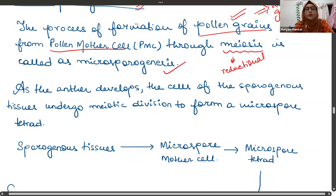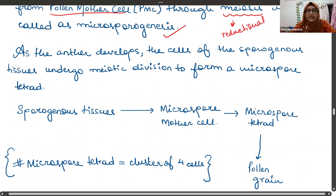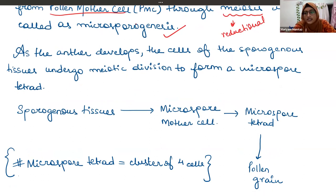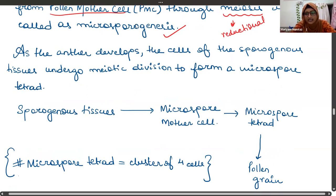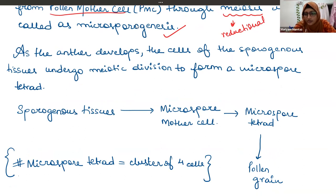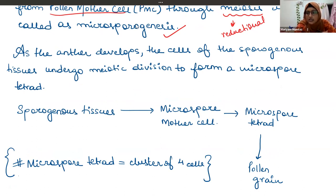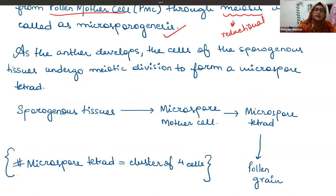Whenever the anther develops, we studied that the anther has walls and cells present inside. From outermost to innermost: epidermis, endothesium, middle layer, tapetum, and then sporogenous tissue. As the anther develops, the cells of the sporogenous tissues undergo meiotic division to form a microspore tetrad.